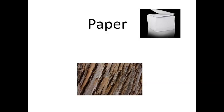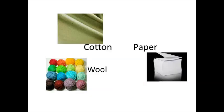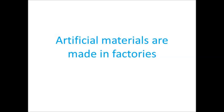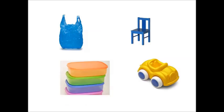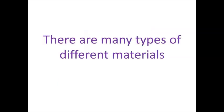Paper comes from tree bark. These are all natural materials. Artificial materials are materials that do not occur naturally and are made in factories. These are materials like plastic and glass. Drinking glasses, windows, and bottles are all made of glass. Bags, chairs, containers, and toys are made of plastic. There are many types of different materials.